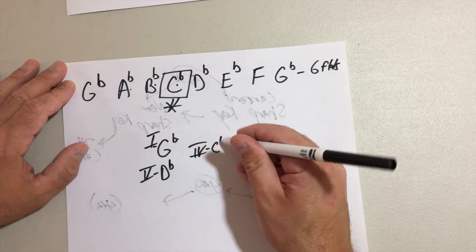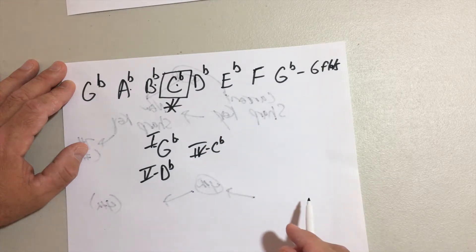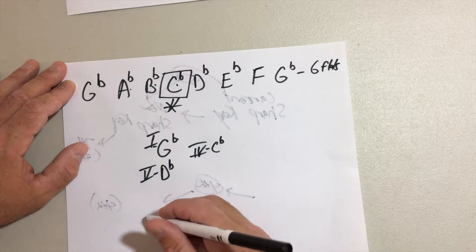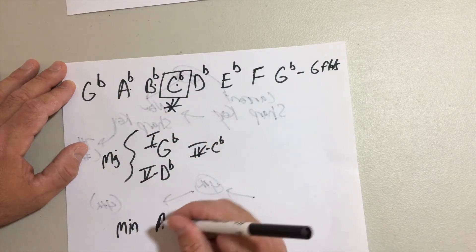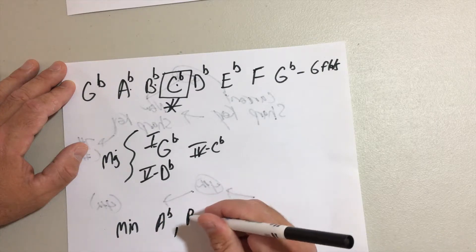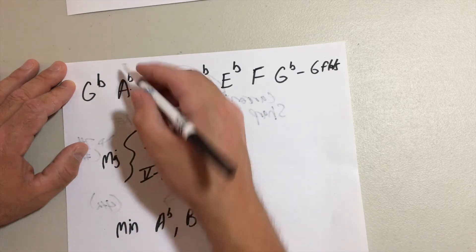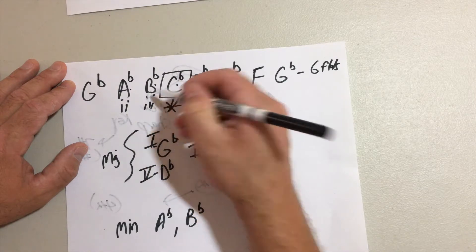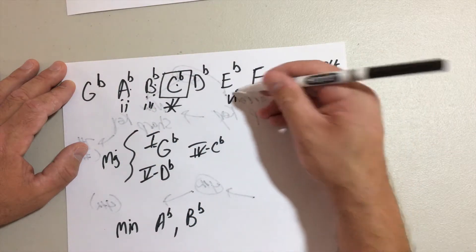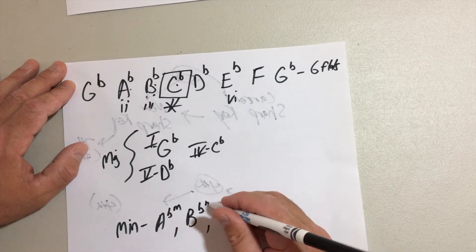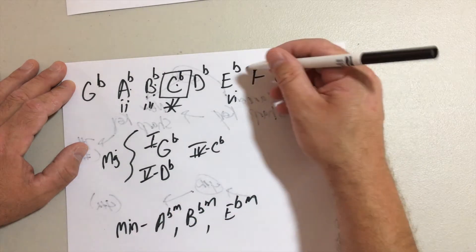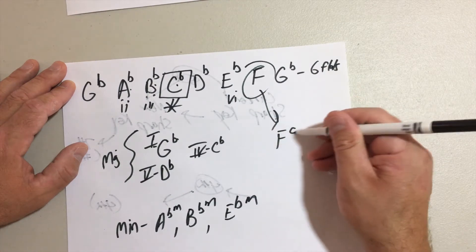For the minor chords, these are major, the minor chords are gonna be A flat, B flat, and E flat - the two, the three, and the six. And those are gonna be minor. And then the seven is an F diminished chord.